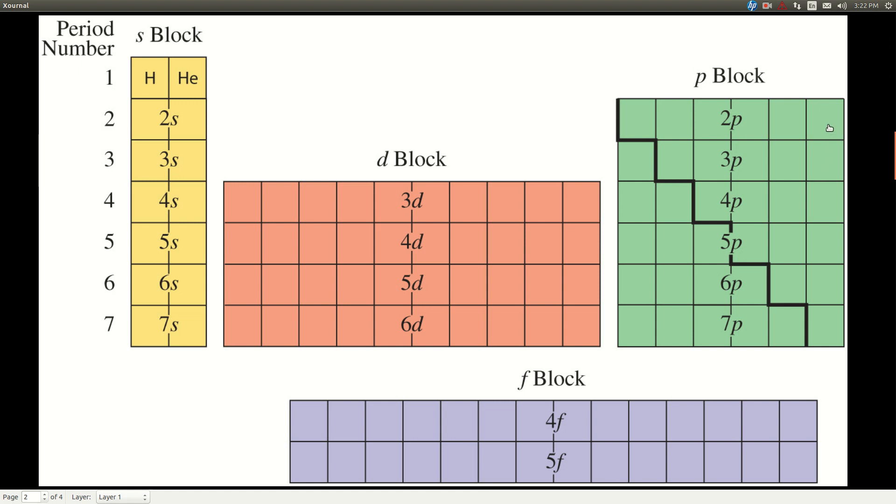if that's that element, its electron configuration ends in P6. So neon ends in 2P6, argon 3P6, krypton 4P6, and so on. P5 for this column, these are the halogens here, P4, P3, P2, and P1.